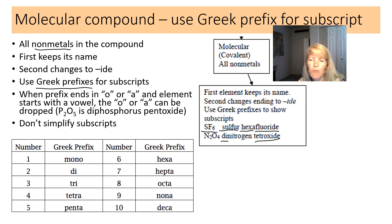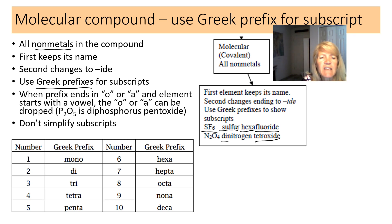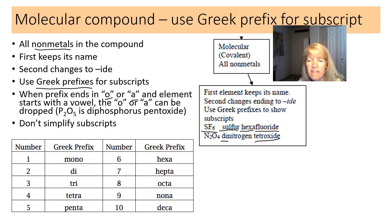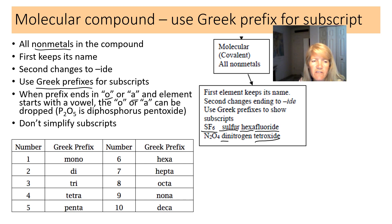You might wonder — tetra oxide? When a prefix ends in an 'a' or 'o' and the element name starts with a vowel, it's a bit awkward, so we just drop the 'a' and call it tetroxide. That's a grammar rule you can apply.